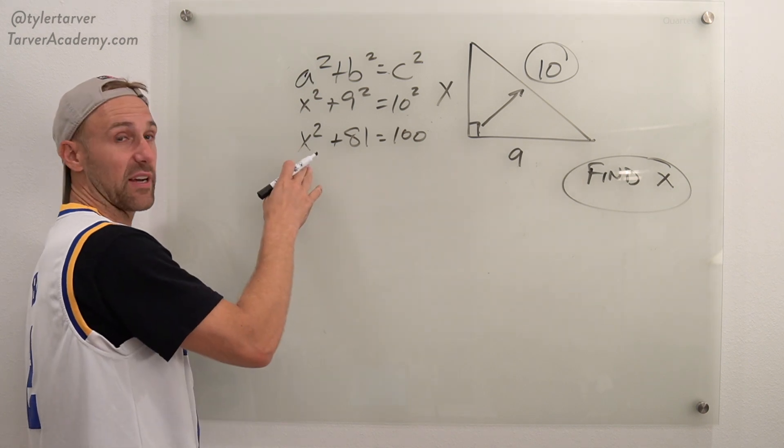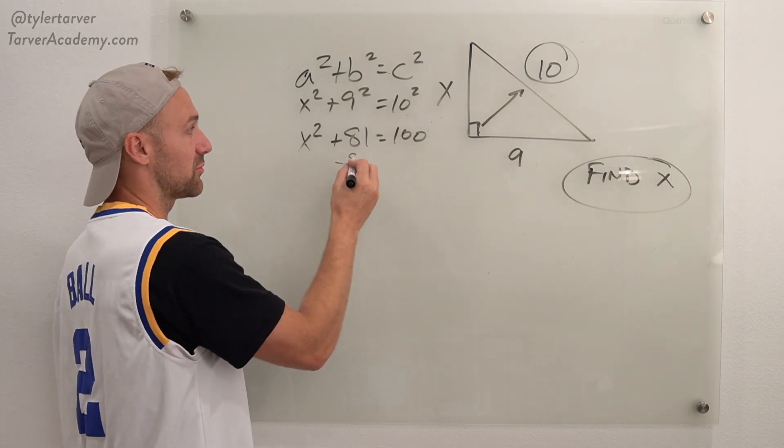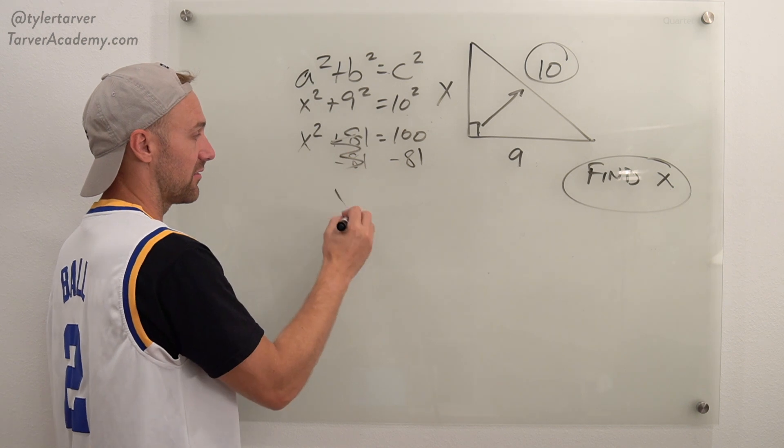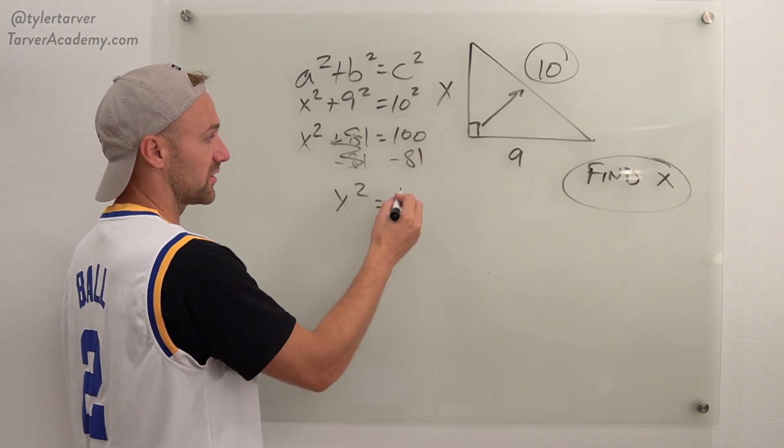Now I need to get X by itself. So I've got to get rid of 81. So I'm going to subtract it from both sides. That cancels out. I've got X squared equals 19.